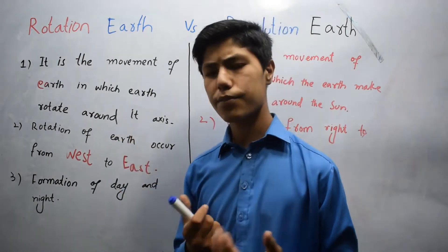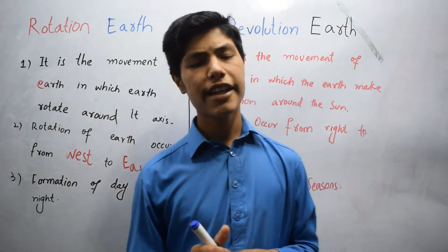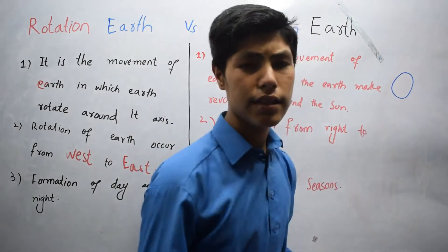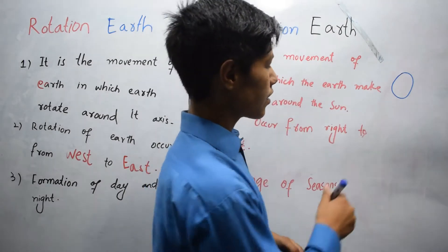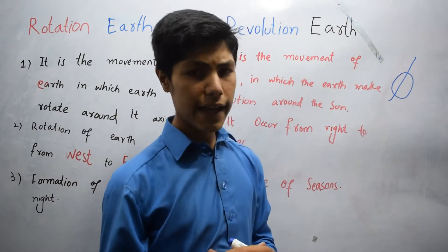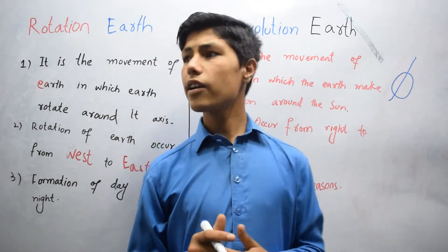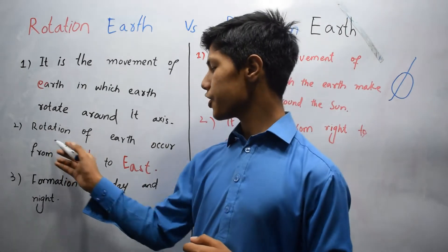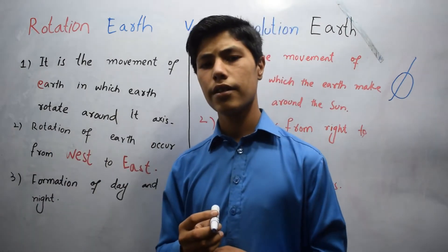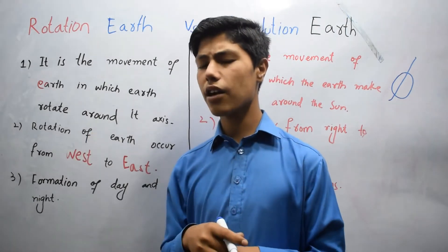Axis means the peak point. This is earth and the earth revolves around its own axis. The second point is rotation of earth occurs from west to east. Basically rotation of earth occurs anticlockwise.